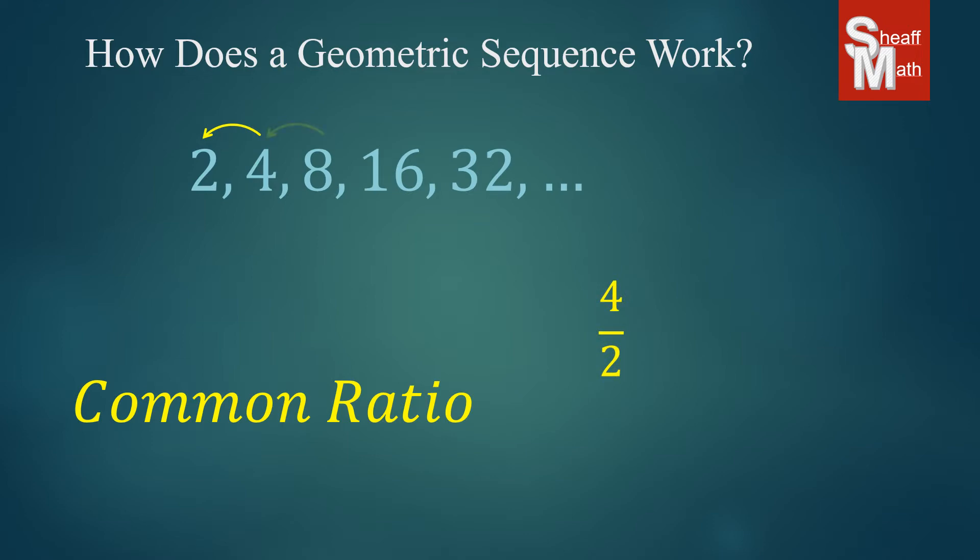So 4 divided by 2, 8 divided by 4, 16 divided by 8, and 32 divided by 16, which all come out to 2. And so the key to finding the missing number or the next number is to find this common ratio so that we can use that number to multiply to find our missing number.